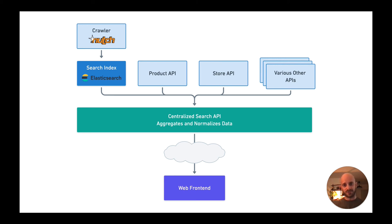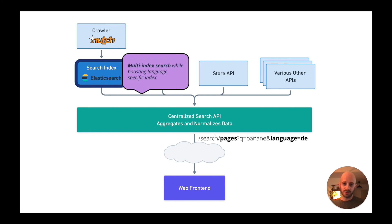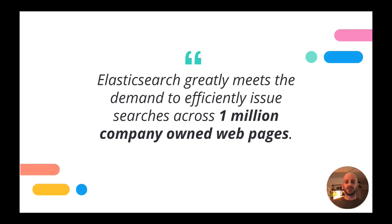The new solution looked similar but different — we replaced the whole Google stack with Elasticsearch. The centralized search API now issues calls directly to Elasticsearch. For example, if a user searches for pages with the word 'banana' in German, it issues a search call to Elasticsearch and performs a multi-index search: it targets the German index with a higher boost, but also searches the sync index with a lower boost. This way the user also finds content in the sync index even if there are indexing issues.